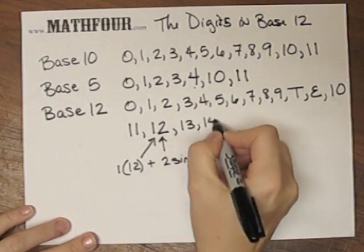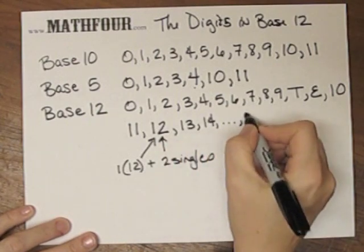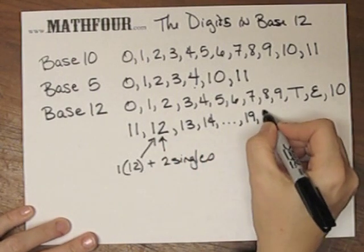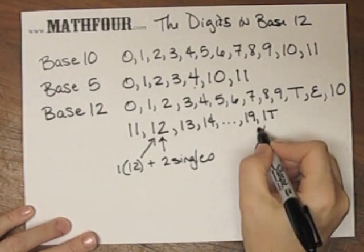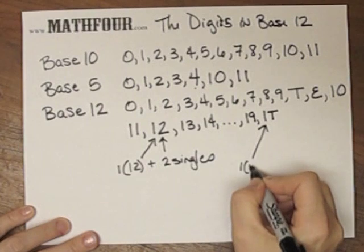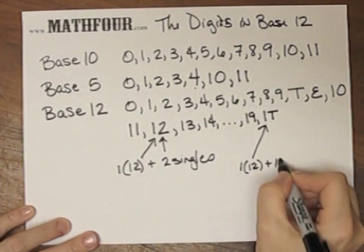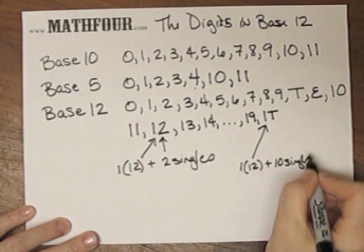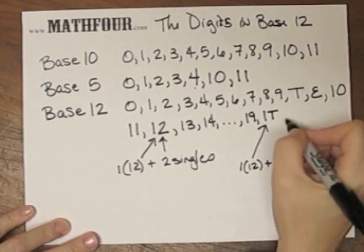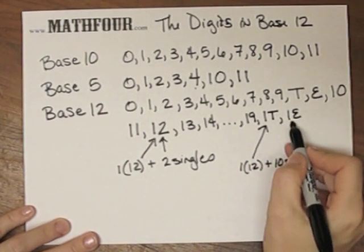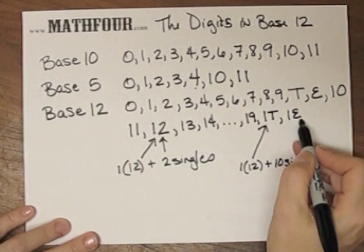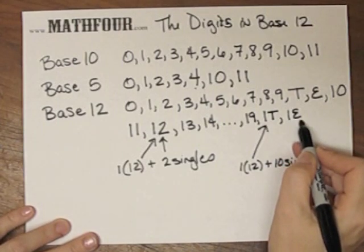1, 3, 1, 4 and so on, up to 1, 9 and then we get to 1, 10. 1T means 1 set of 12 plus 10 singles. This number is 22. 1E, 1 set of 12 plus 11 singles. This number translates for us into 23.